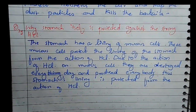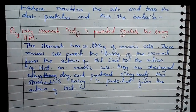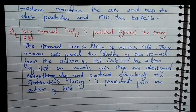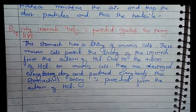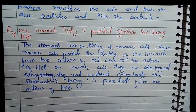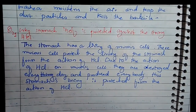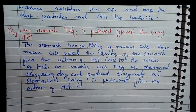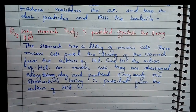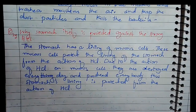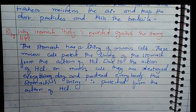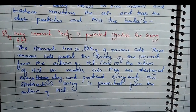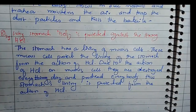Question number 21, the last reasoning question: how is the stomach itself protected against the strong HCL? The stomach has a protective mucus membrane. Mucus cells protect the lining of the stomach from the action of HCL. When HCL concentration increases, the mucus layer can be destroyed, which can cause peptide ulcers. However, the mucus membrane is renewed every day, which is why the stomach lining is protected from high HCL concentration.